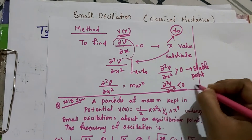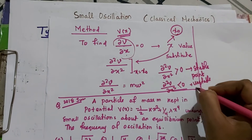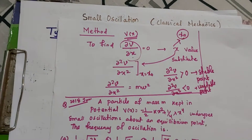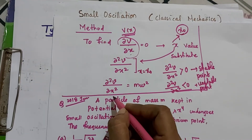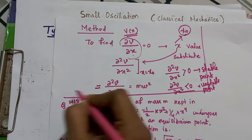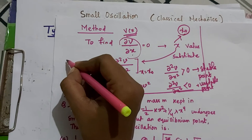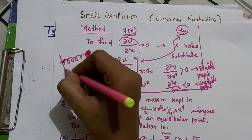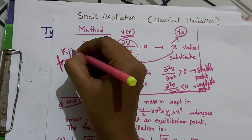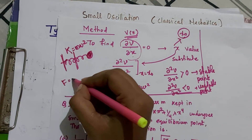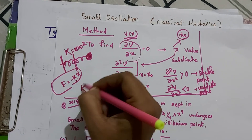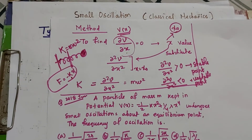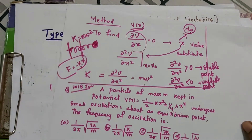For an unstable point, ∂²V/∂x² < 0. Some questions only ask about finding the stable or unstable points. Now, ∂²V/∂x² equals mω² — or equivalently the spring constant k — since k = mω². You can also relate this to F = −kx, where F is the force, using the relation between force and potential.